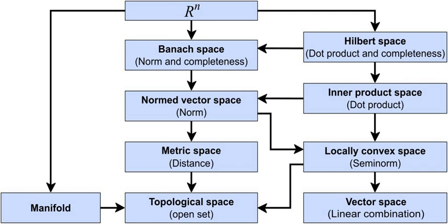Euclidean space is homogeneous in the sense that every point can be transformed into every other point by some automorphism. Euclidean axioms leave no freedom; they determine uniquely all geometric properties of the space. More exactly, all three-dimensional Euclidean spaces are mutually isomorphic. In this sense we have the three-dimensional Euclidean space. In Bourbaki's terms, the corresponding theory is univalent. In contrast, topological spaces are generally non-isomorphic; their theory is multivalent. A similar idea occurs in mathematical logic: a theory is called categorical if all its models of the same cardinality are mutually isomorphic. According to Bourbaki, the study of multivalent theories is the most striking feature which distinguishes modern mathematics from classical mathematics.